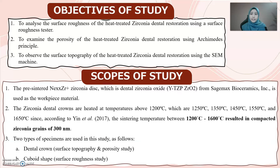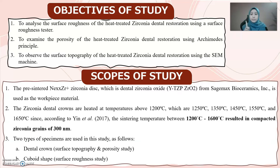The scope of the study: First, the pre-sintered zirconia disc, which is dental zirconia oxide from Sagemat's bioceramics, is used as the workpiece material. Second, the zirconia dental crowns are heated at temperatures above 1200 degrees Celsius, with five types of temperature. According to Yin, sintering temperatures between 1200 and 1600 degrees Celsius result in compacted zirconia grains of 300 nanometres. In this study, two types of specimens are used: dental crowns for surface topography and porosity study, and cuboid shapes for surface roughness study.